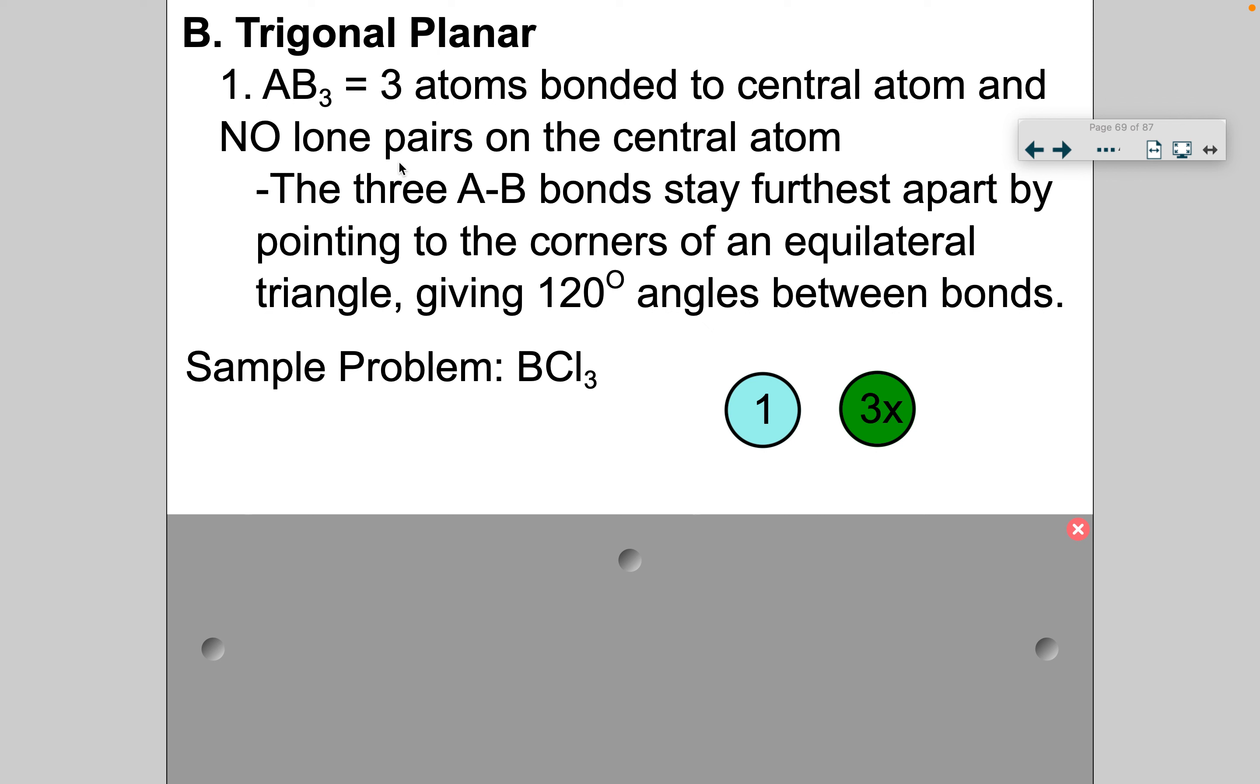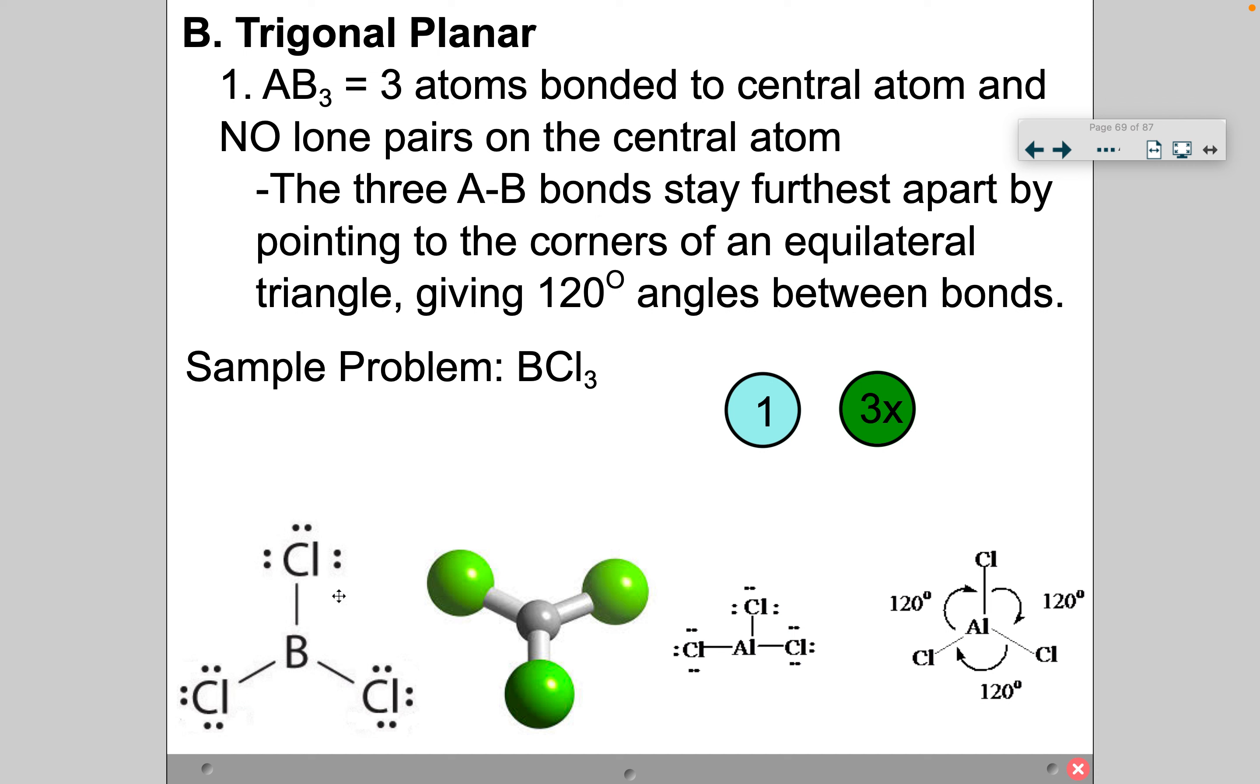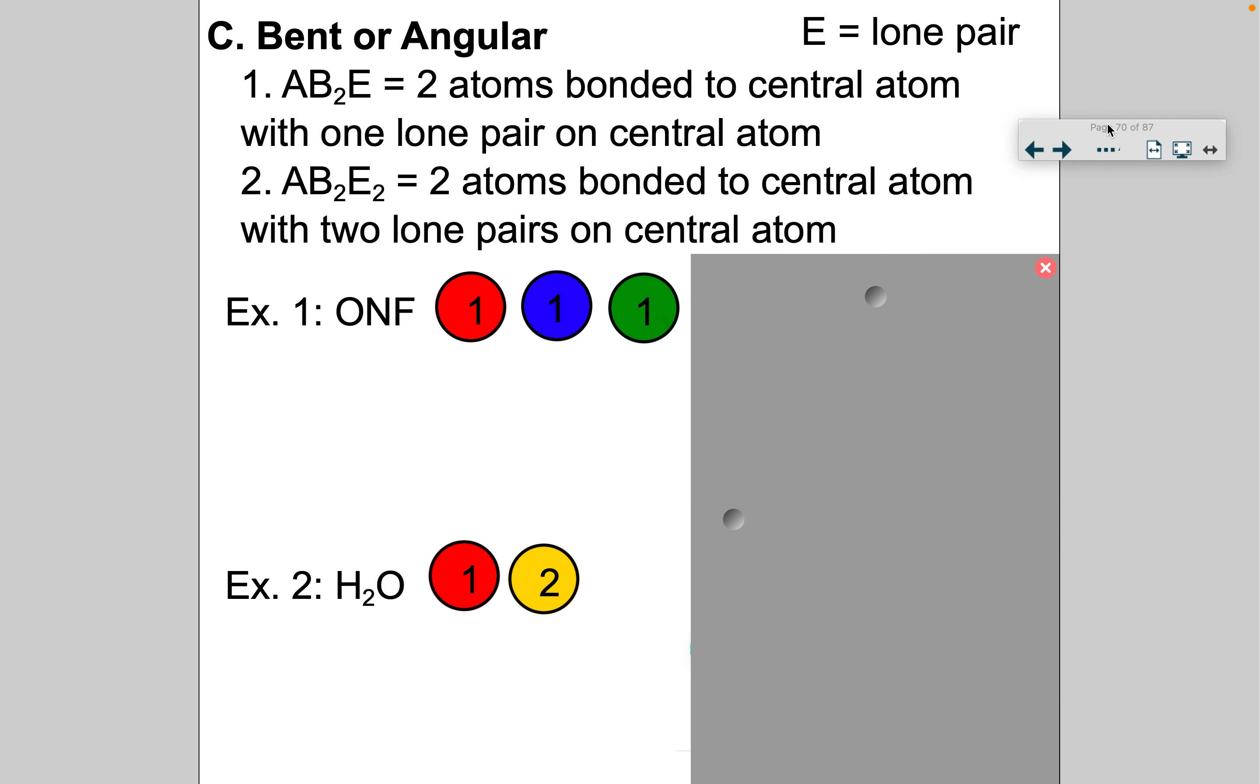Another shape for VSEPR theory is called the trigonal planar. And this format is an AB3. Basically, we have three atoms bonded to a central atom. And again, no lone pairs on the central atom, so no dots. And these three AB bonds, they stay furthest apart at 120 degree angles. So I think with this, I usually have you guys follow along and model these with the ball and stick models. But since you're at home watching this, here's my central atom, no lone pairs. And then I have three off. As you can see that this is 120 degrees. This is the maximum distance for these valence electrons to be away from these valence electrons. Aluminum chloride, same thing. So we draw the Lewis structure like this, but in reality, the shape of it is like this.